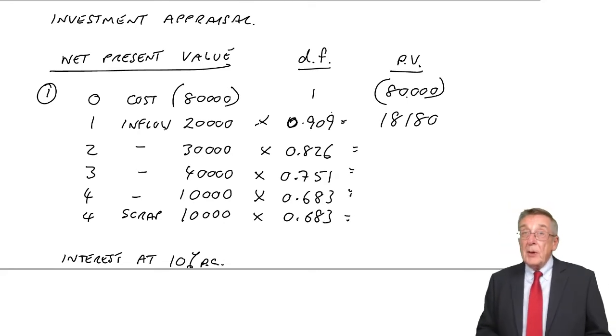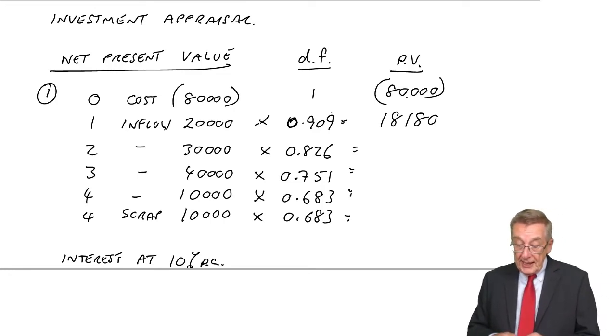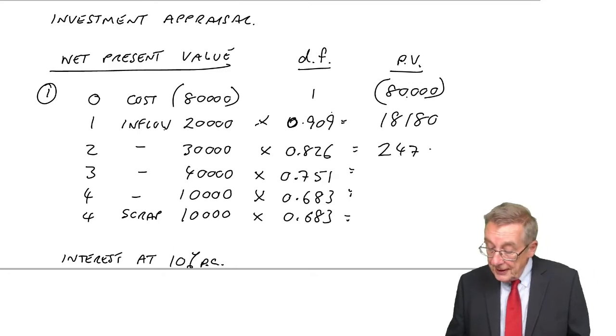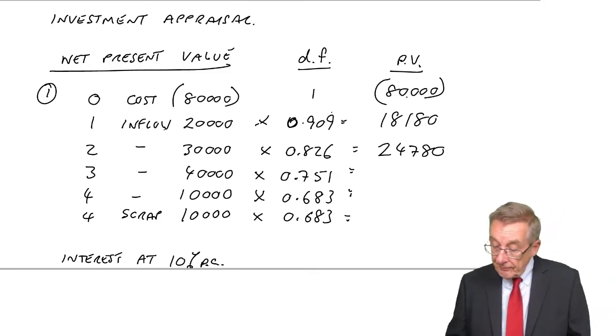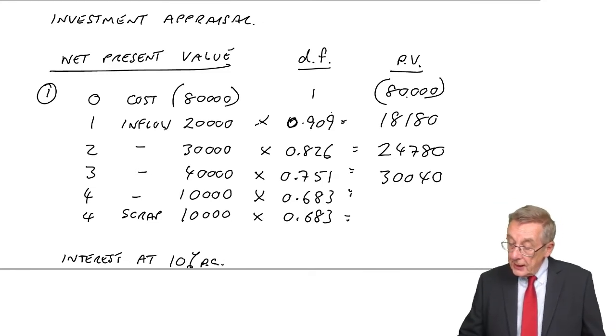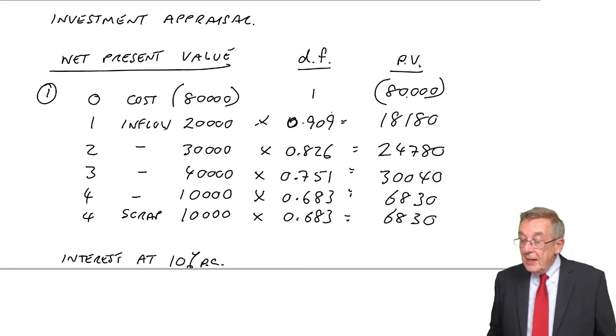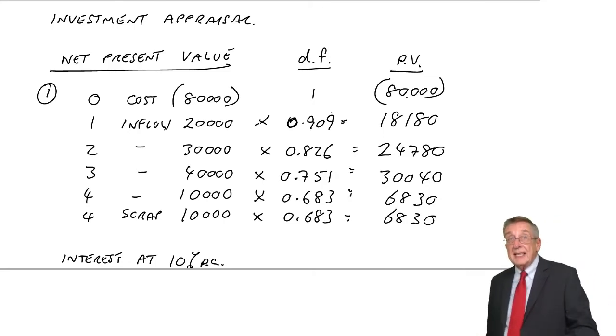And to work out the present value of each flow, 30,000 times 0.826 is 24,780. 40,000 times 0.751, 30,040. 10,000 times 0.683 is 6,830 each time. So there's the present value of the flows, the equivalent amount now. Pay out 80, get back 18, 24, 36, 6.